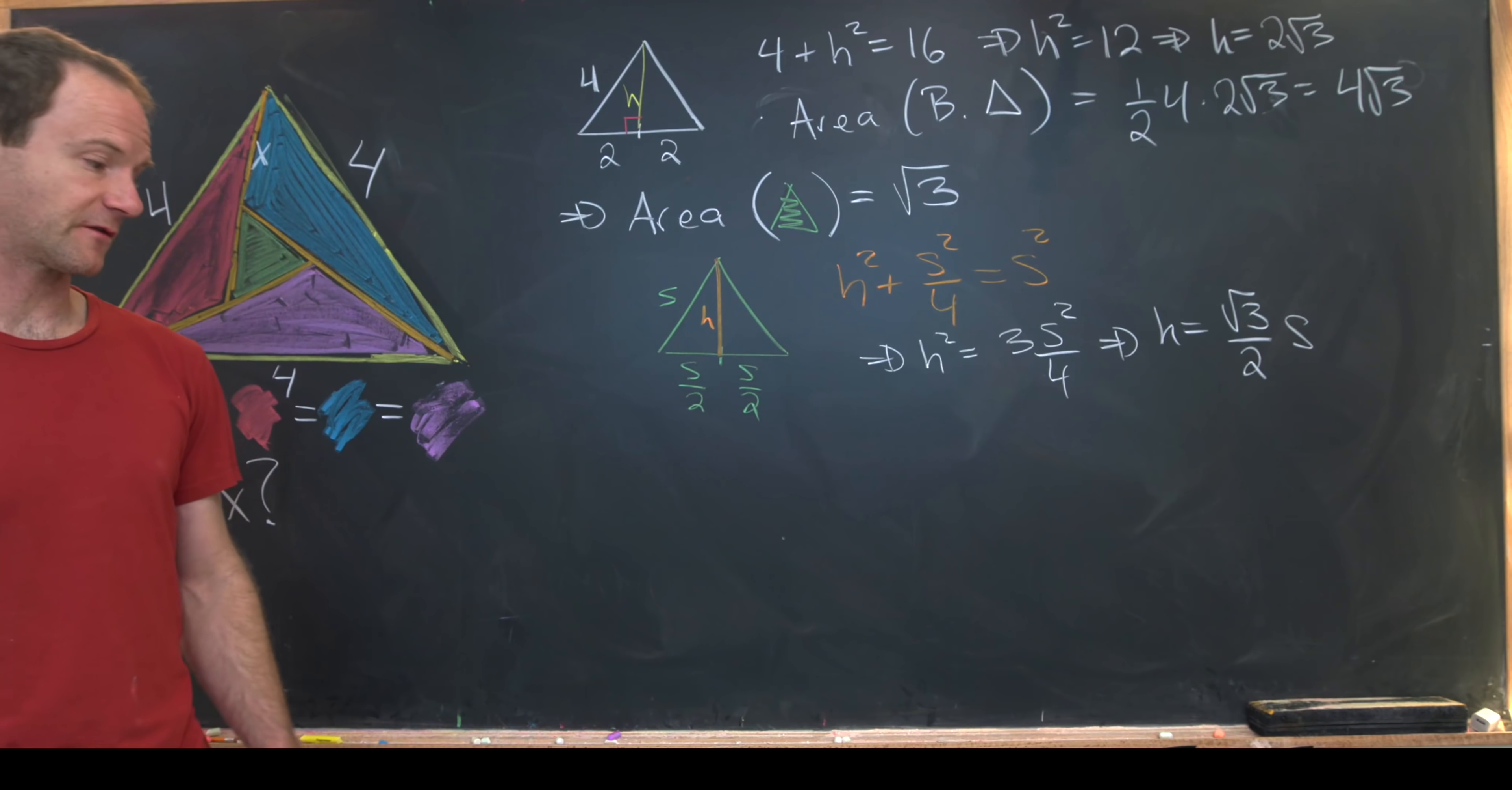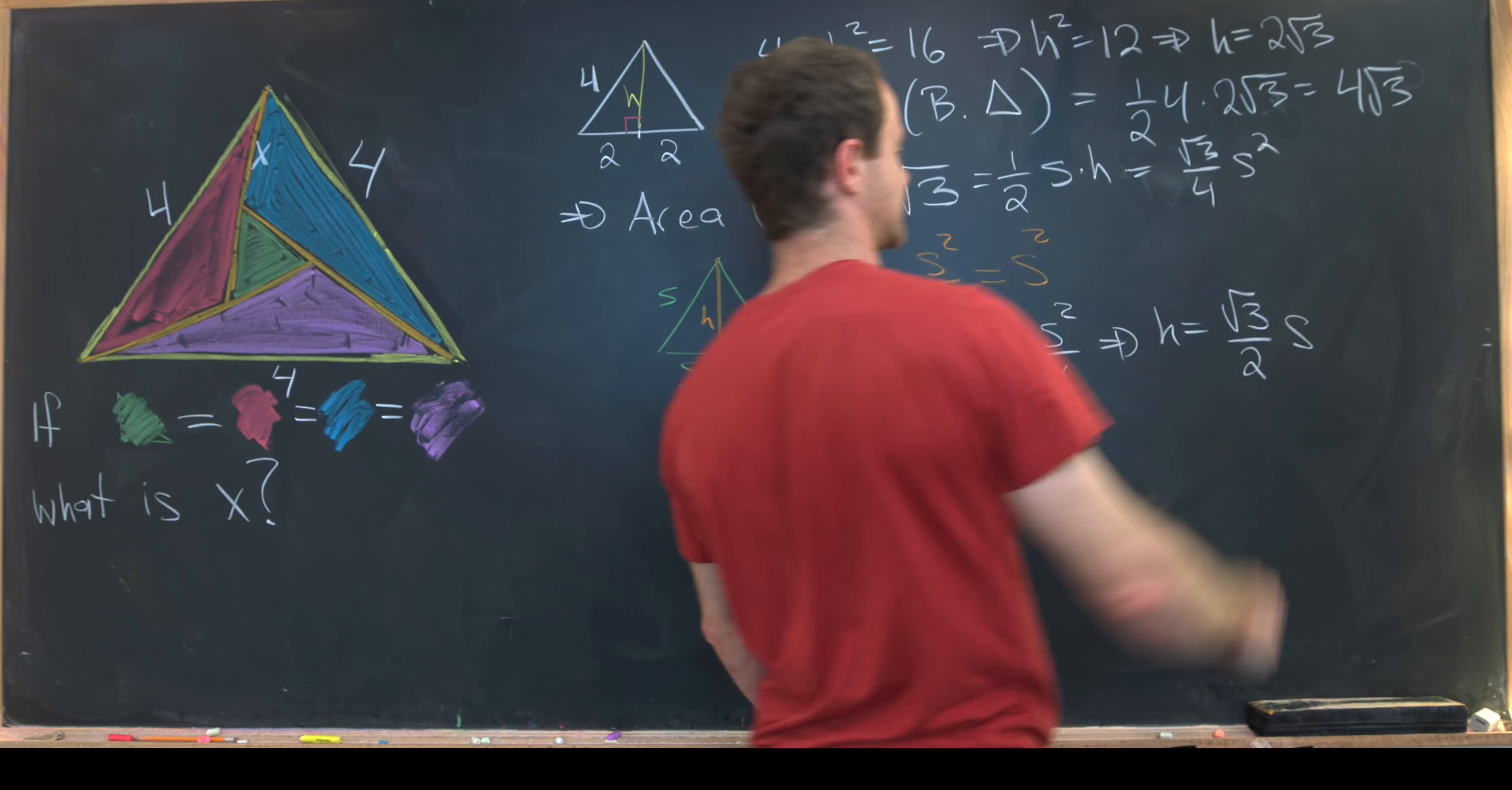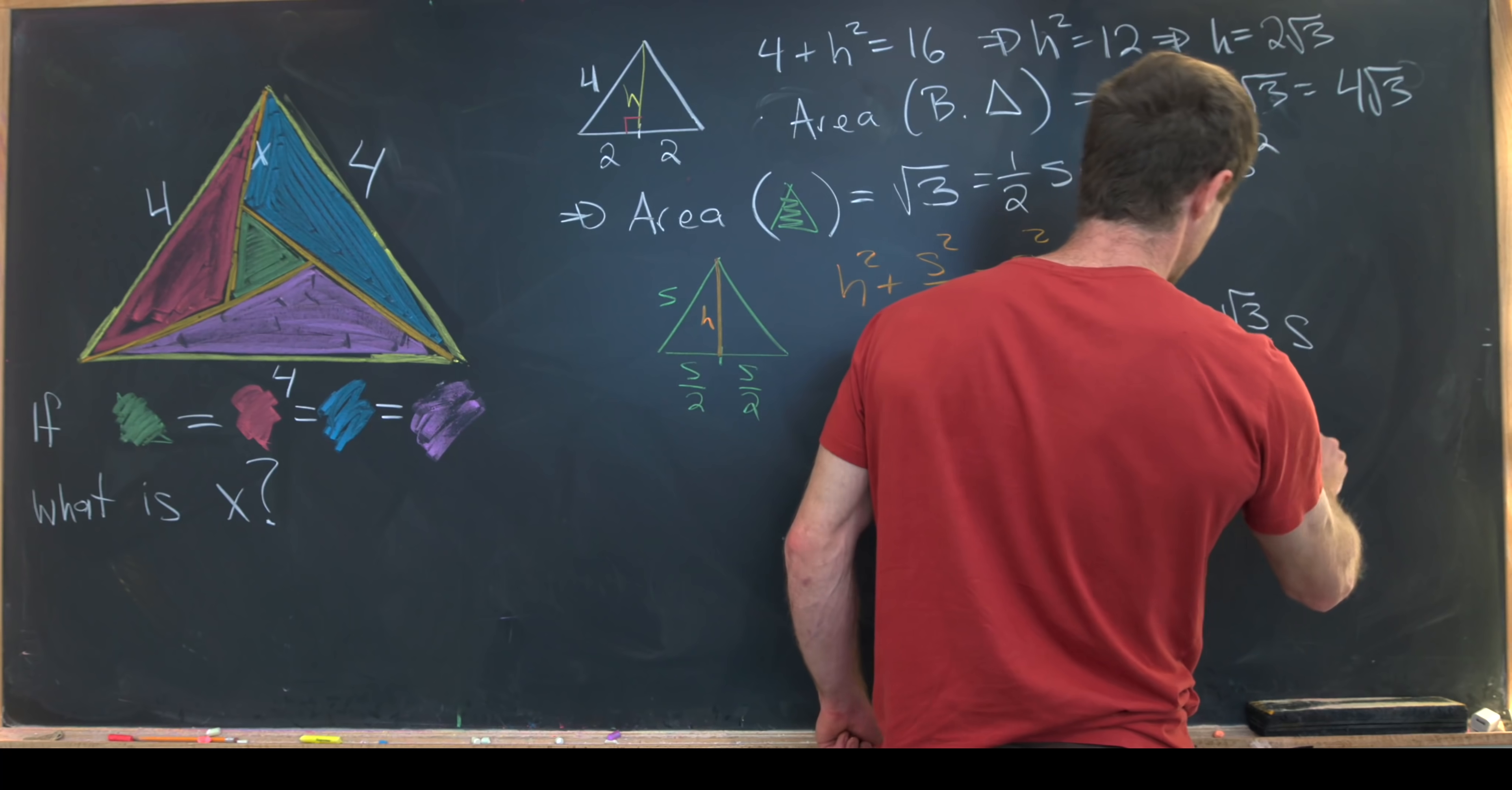But now using the standard formula for the area of the triangle for this, we see that this is 1 half base times height, which will be s times h, which will be equal to the square root of 3 over 4 times s squared when all is said and done. That gives us a nice equation that's easily solvable for s. Just multiply 4 over here and divide the square root of 3. We see that s squared is equal to 4 or s is equal to 2.